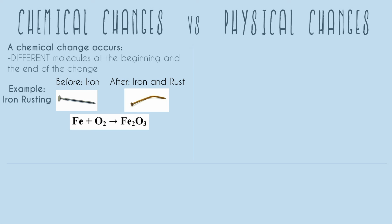So we see here that we needed iron — that's our nail. We needed O2, which is just oxygen that was in the environment naturally in the atmosphere. And then it created rust, which has the formula Fe2O3. So chemical changes will have these chemical equations, which are able to show us our reactants and our products.